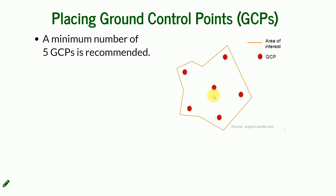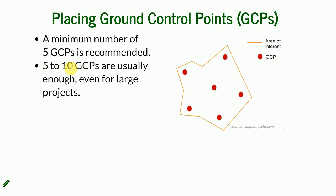The minimum recommended number of ground control points is five. It's a rule of thumb — you need to cover the area depending on its shape, placing one in each corner and one in the middle. That's the recommended minimum, but five to ten are usually enough. It depends on your project. Putting a lot of GCPs just means longer measurement time and doesn't improve the quality of the end results.